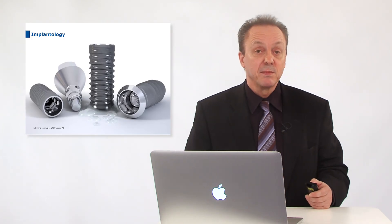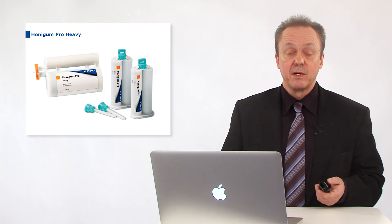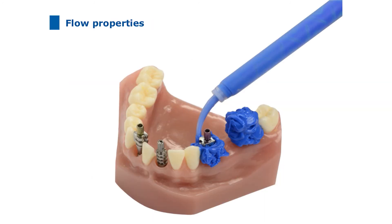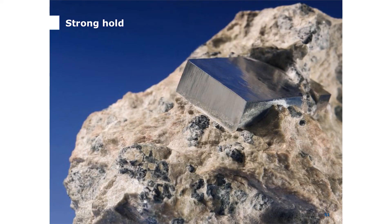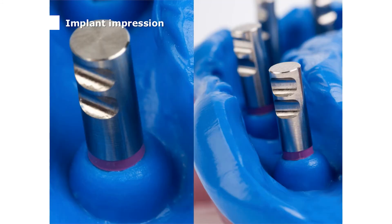In implantology, impression materials must meet special requirements. The position of the implant in the patient's mouth is transferred to a laboratory model by transfer posts. Ideal flow behaviour and ultimate strength are required to assure that the transfer post is in the same three-dimensional position in the impression as in the mouth of the patient. Here again we have the ideal impression material within the Honeygum Pro family: the Honeygum Pro Heavy. Its flow properties make syringing around and over the transfer post unique and easy, and with a final hardness of 60–8 Shore-A hardness, it ensures safe transmission of the transfer post position within the impression. The perfect flow properties and final hardness assist both the dentist and technician with implant impressions.